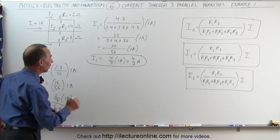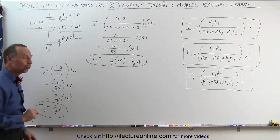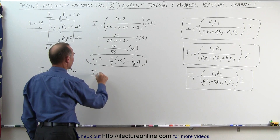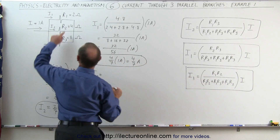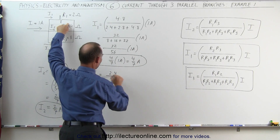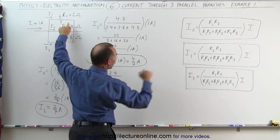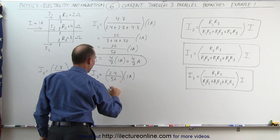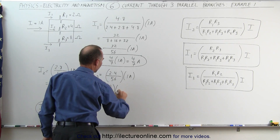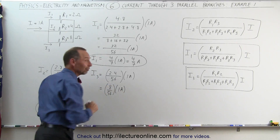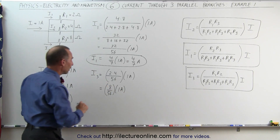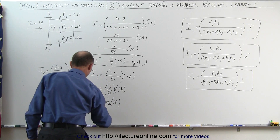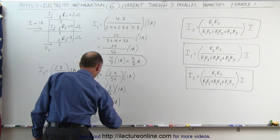So now we have I1, which is 4 sevenths of an amp, and I2, which is 2 sevenths of an amp. And finally, I can calculate I3, which is equal to R1 times R2, which is 2 times 4, divided by the sum of those three products, which again is 56, multiplied times 1 amp. This equals 8 over 56 times 1 amp, and dividing both numerator and denominator by 8 gives 1 seventh times 1 amp, so I3 is equal to 1 seventh of an amp.